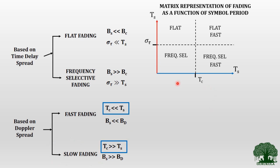Where T_s is less than T_c, that region is classified as slow fading. To the left of the T_c value on the axis, T_s holds a lesser value than T_c, so that entire region is slow fading. This matrix representation summarizes fading types as a function of symbol period T_s.